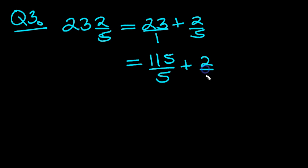Plus 2 fifths. So 2 more added onto 115 fifths gives 117. 117 fifths.